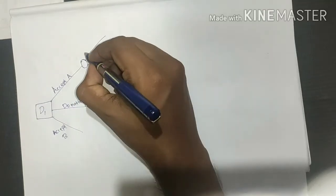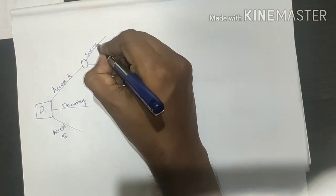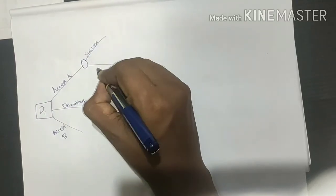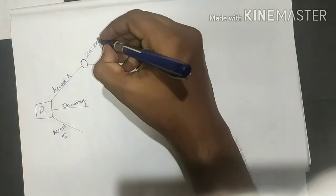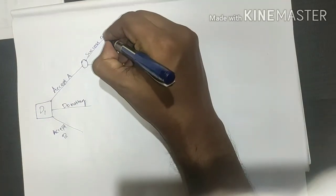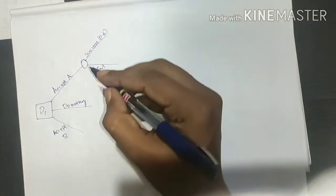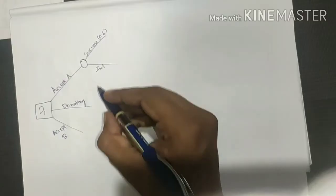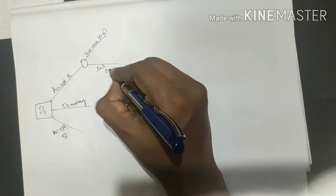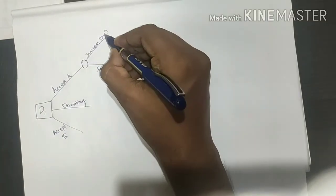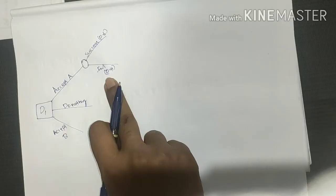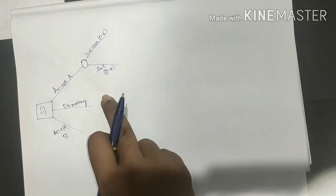From the decision node, we have success or fail branches. For investment A, success probability is 0.6 and failure probability is 0.4.